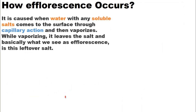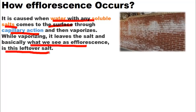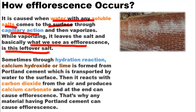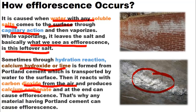How does efflorescence occur? It is caused when water with soluble salts comes to the surface through capillary action and then vaporizes. While vaporizing, it leaves the salt behind — what we see as efflorescence is that leftover salt. Sometimes, through hydration reaction, calcium hydroxide or lime is formed from Portland cement, which is transported by water to the surface. It then reacts with carbon dioxide from the air and produces calcium carbonate, which is what we see in white color. And at the end, it causes efflorescence.